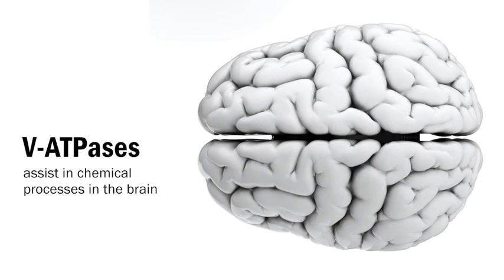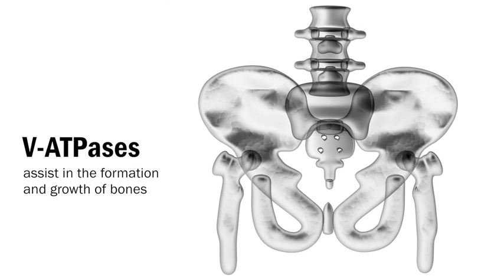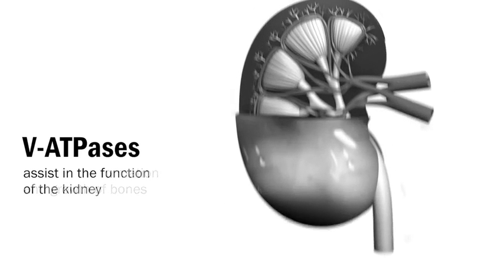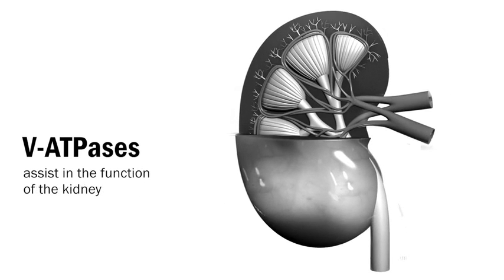We use V-ATPases to pump protons to transmit chemical signals in the brain at the chemical synapse. We use V-ATPases to control the formation and growth of bones. We use V-ATPases to pump protons to control the function of the kidney.